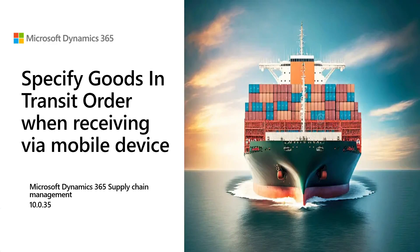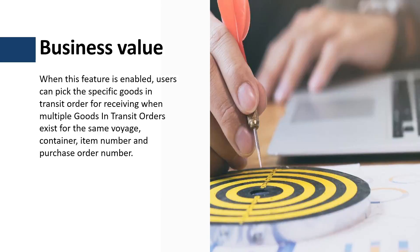Welcome to this tutorial where we will review how to receive and specify a specific goods in transit order while receiving items from the warehouse management mobile application. This feature was introduced to enable users to select a specific goods in transit order while receiving items from the mobile application when multiple goods in transit orders exist for the same voyage, container, item number, and purchase order number.